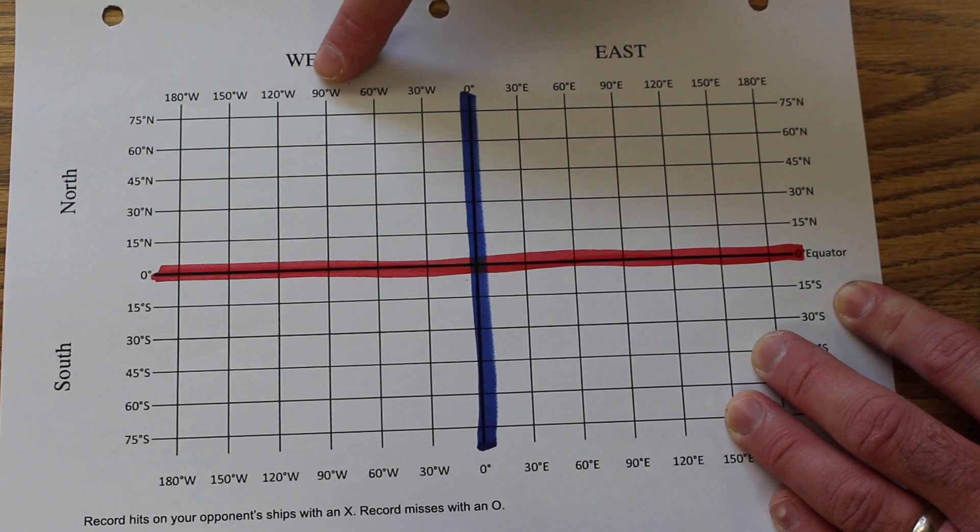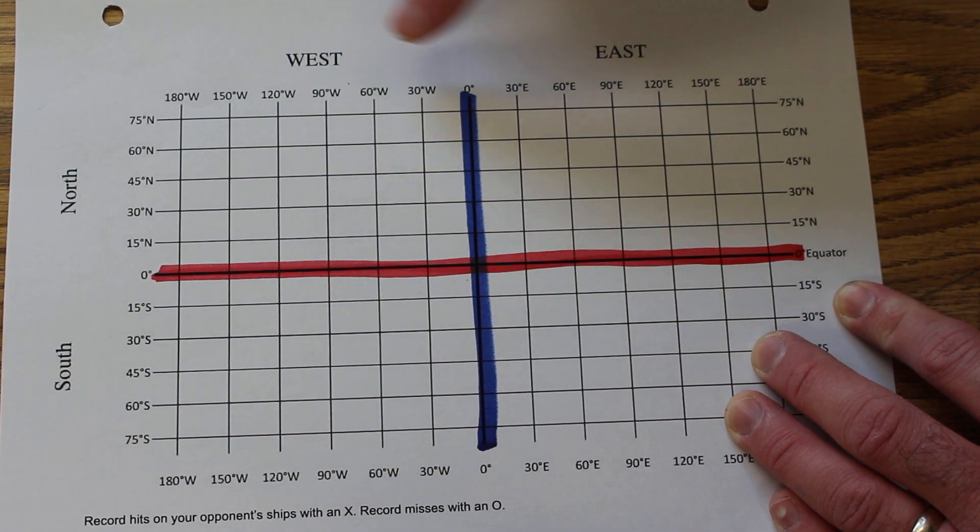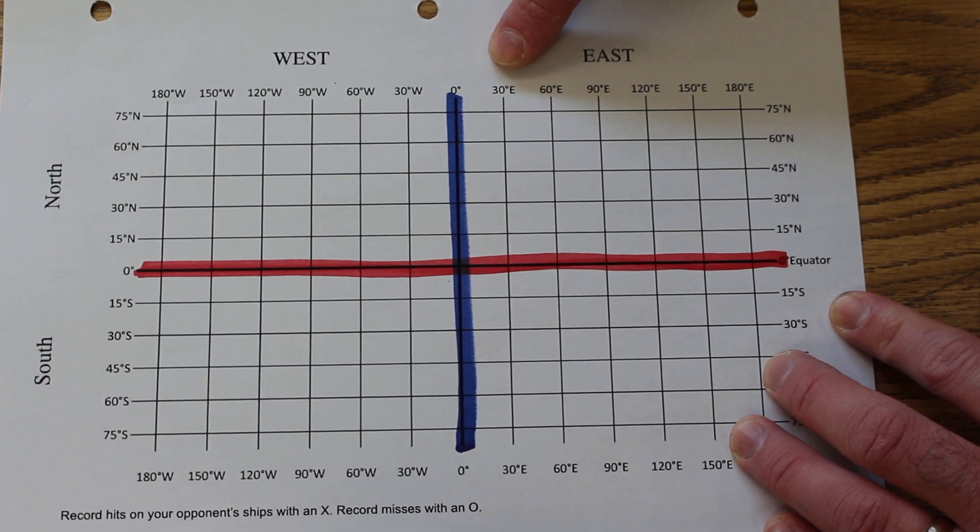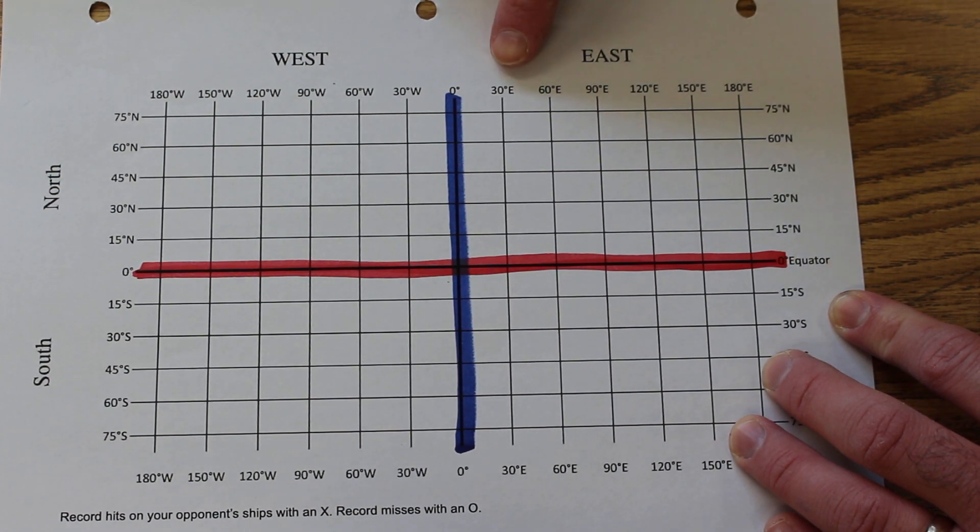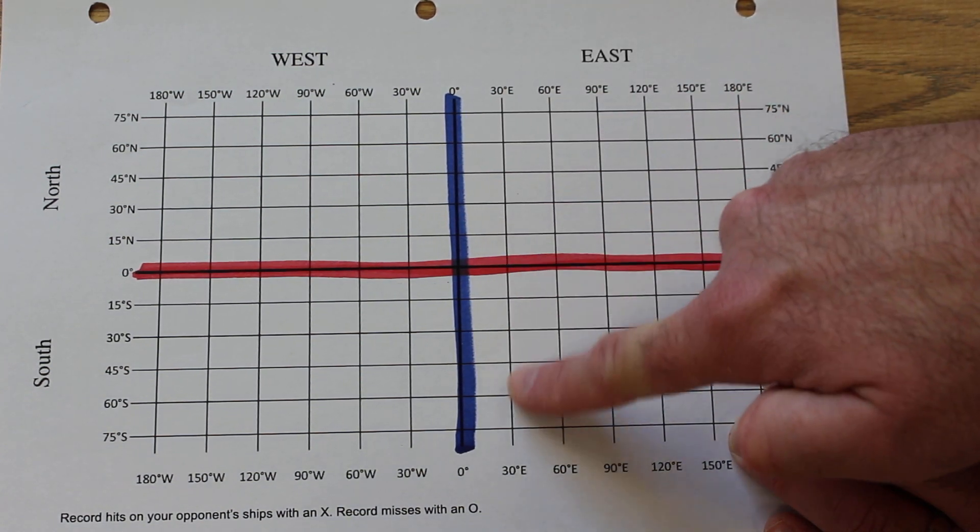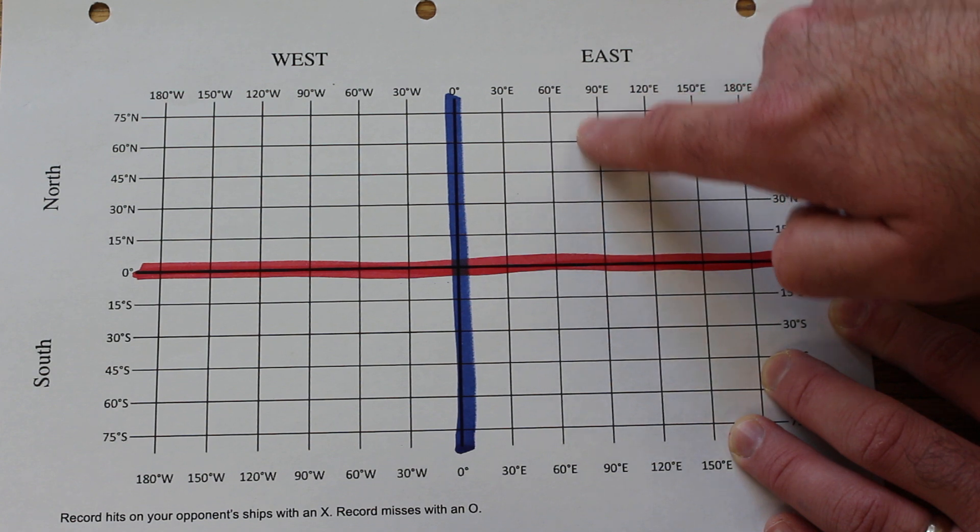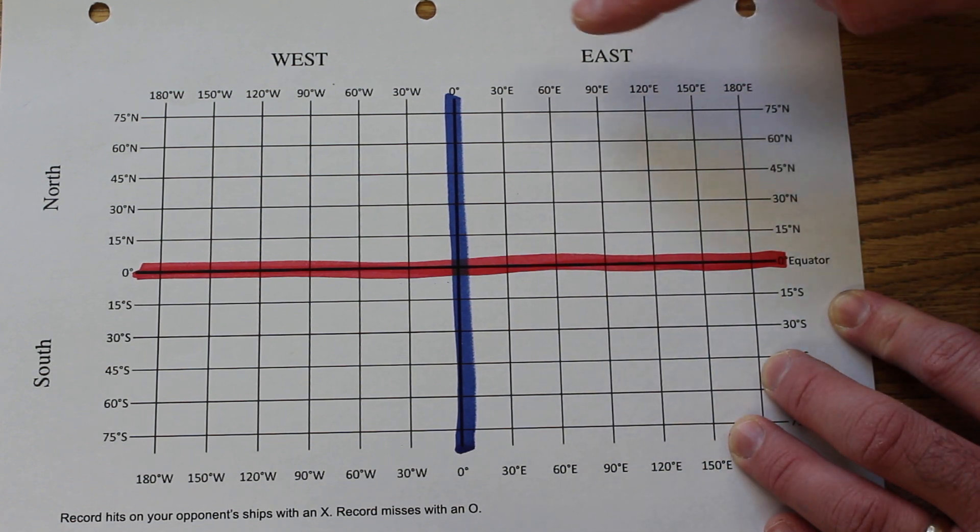These are longitude lines. Anything to the east of the prime meridian is going to be labeled east longitude. So you have 30 degrees east longitude, 60 degrees east longitude, 90 degrees east longitude, and so on.